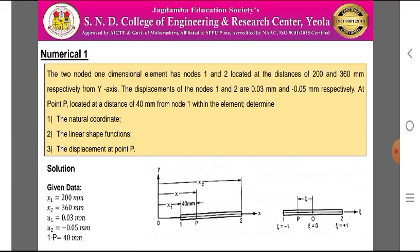The two-noded one-dimensional element is shown in the figure in local as well as natural coordinate systems. In the local coordinate system, X1 denotes the distance of node 1 from the y-axis, X2 denotes the distance of node 2 from the y-axis, and X is the distance of point P from the y-axis. In the natural coordinate system, node 1 is at ε = -1, node 2 is at ε = +1, and point P is at a distance ε from ε = 0.